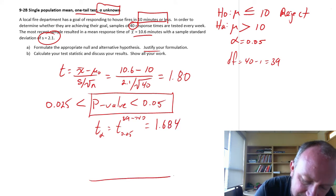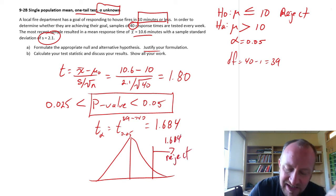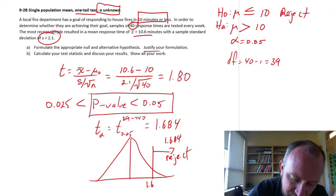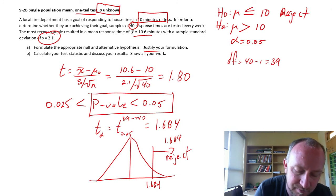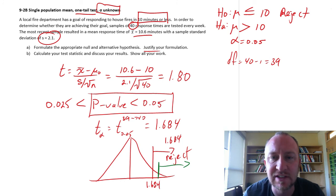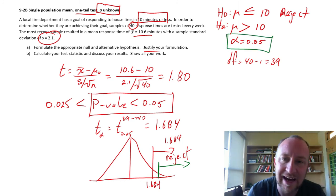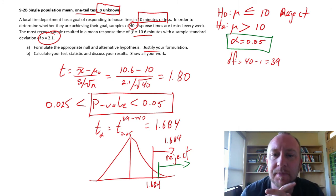If we look at a t-distribution, that looks something like this, here is 1.684, and I'm going to reject for any value greater than 1.684. My test statistic is 1.8, and so it's somewhere up here in that rejection space. So, thankfully, we get the same conclusion at alpha of 0.05, the level of significance.